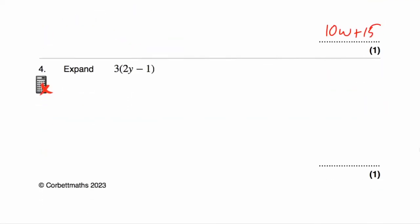Question number four asks us to expand 3(2y − 1). We need to multiply what's inside the brackets by three. Three times 2y — three times two is six — so that'll be 6y minus. And three times one would be three. The answer is 6y − 3.